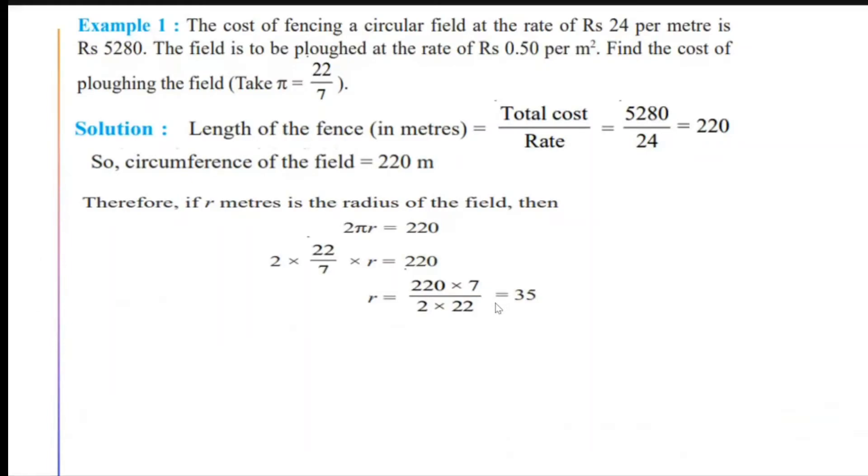Now, once I have got the answer of the radius to be 35 meters, I can find out the area. Reason being, I need to find out the cost of plowing the field at Rs 0.50 per meter square. This per meter square indicates that I need to find out the area. I know the formula.